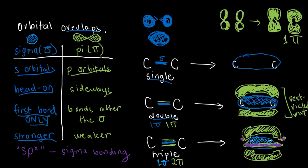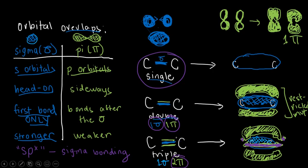What we should now understand is the dynamics of carbon, because it's interesting: how is it possible that sometimes a carbon has no pi bond, sometimes 1 pi bond, and sometimes 2 pi bonds? That's the dilemma or mystery we are going to address next.